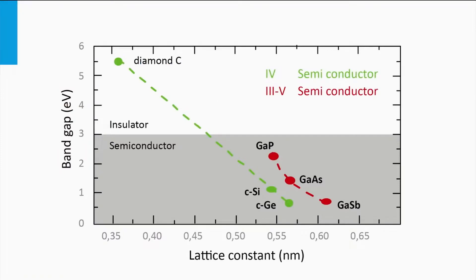Let's consider the III-V materials based on gallium, like gallium phosphide, gallium arsenide, and gallium antimonide. Again, the larger the lattice constant of the material, the smaller the band gap will be. Gallium phosphide has the smallest lattice constant and therefore the largest band gap.